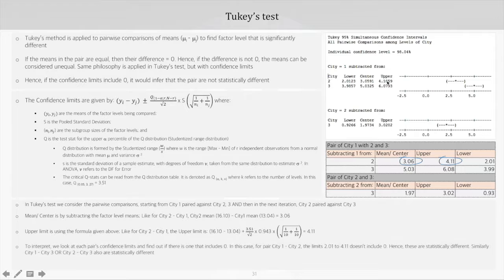From an interpretation point of view, we look at each pair's confidence limits and find out if there's one that includes zero. In this case, for the pair city 1 and city 2, the limits are 2.01 to 4.11. Does it include zero? Obviously no—zero lies on the left side of 2, not between 2 and 4. So the inference is these are statistically different; the performances of city 1 and city 2 on ambulance response time are statistically different.